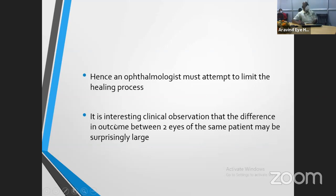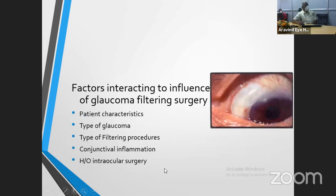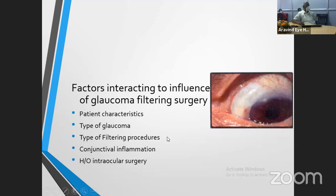It is interesting that the difference in outcome between two eyes is not the same — each eye behaves differently. What are all the factors that influence adverse effects on glaucoma filtering surgery outcome? One is patient characteristics; second is the type of glaucoma; third is the type of filtering surgery; and fourth is the status of the conjunctiva — whether conjunctiva is healthy or adulterated with inflammation, infection, or drugs — and any history of previous intraocular surgery.